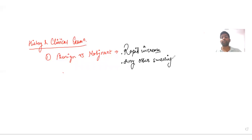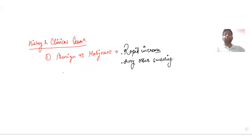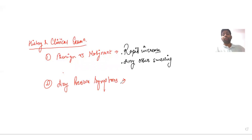Features suggestive of metastasis also favor malignancy, such as recent onset bone pain, severe headache, convulsions, or recent onset jaundice — all going in favor of metastatic disease. We should also keep in mind that presence of compression features in the neck may go in favor of malignancy.